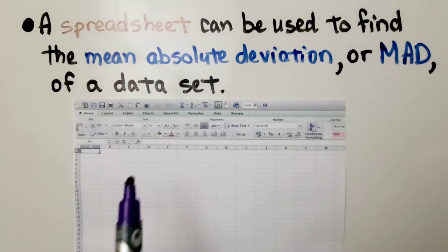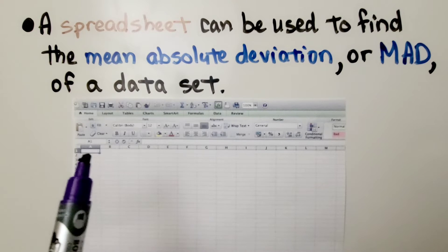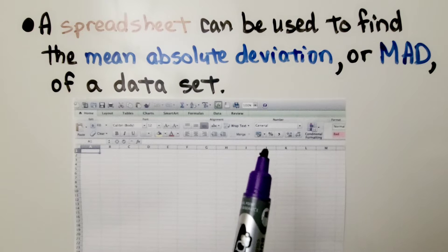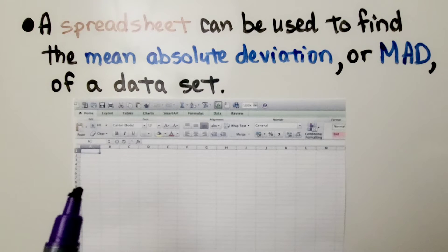So this is what an Excel program would look like if you open it up. You'll see these letters A, B, C, D, E, F, G going across, and you'll see numbers coming down.